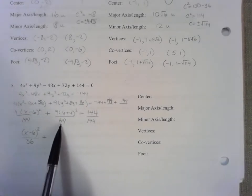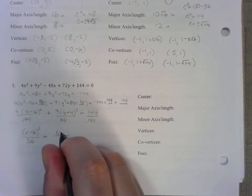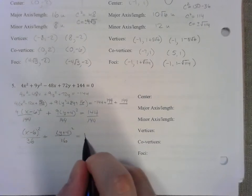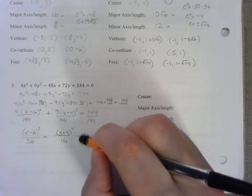Now nine does go into 144 sixteen times, so the quantity y plus four squared divided by 16. Here's another fraction equals one. All right, this is our formula that I'm now really familiar with and we can analyze like we did above.